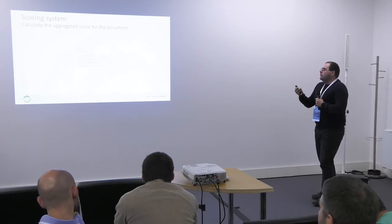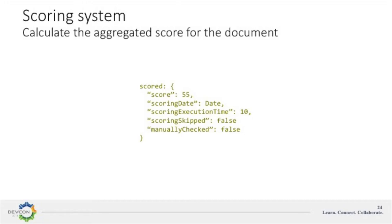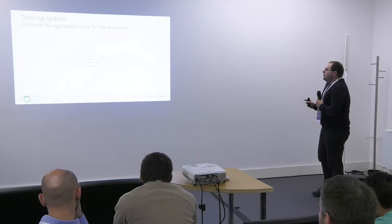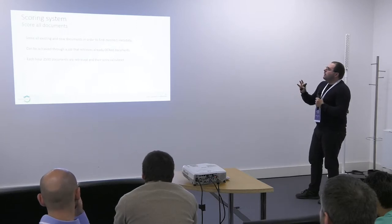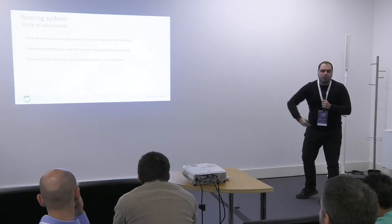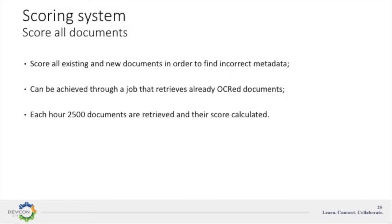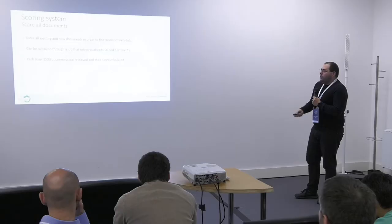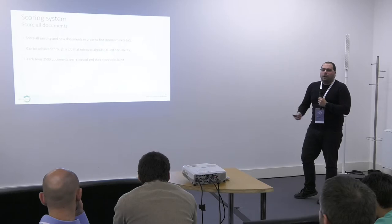After scoring, the node score is stored in the node itself using a score aspect with metadata properties — for example, a 55% score, the time taken (around 10 milliseconds), and other statistical information. Now that we know how to score one document, we need to score all documents. That's done with a job — configurable, but in our case every hour it gets 2,500 documents and scores them.